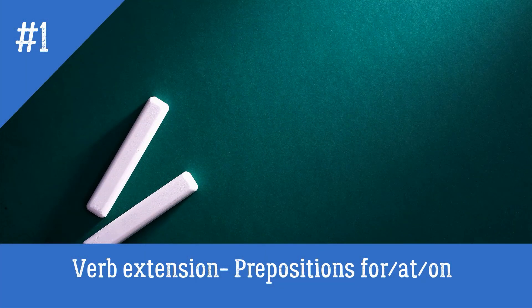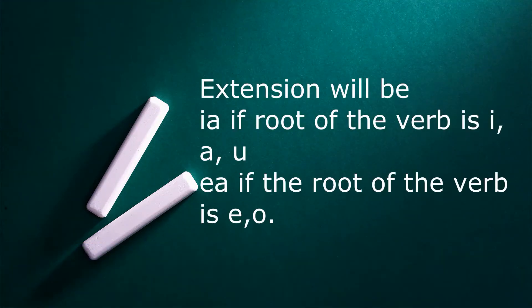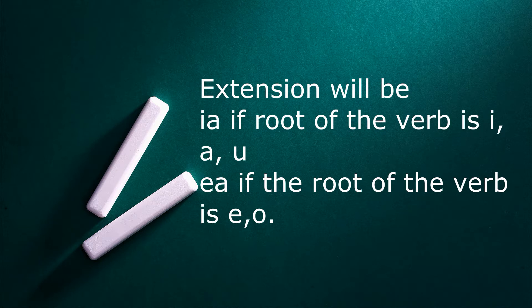In today's video, I will be talking about verb extensions that represent prepositions for, at, and on. So typically the extension will be -ia if the root of the verb is i, a, or u, and -ea if the root of the verb is i, a, or o. I will show you exactly what that looks like.